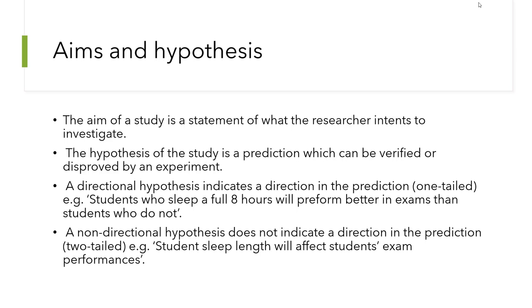You can have directional or non-directional hypotheses. A directional hypothesis indicates a direction in the prediction — a one-tailed test. For example: students who sleep a full eight hours will perform better in exams than students who do not. It's a very specific direction, implying that the student needs to sleep a full eight hours to perform better.